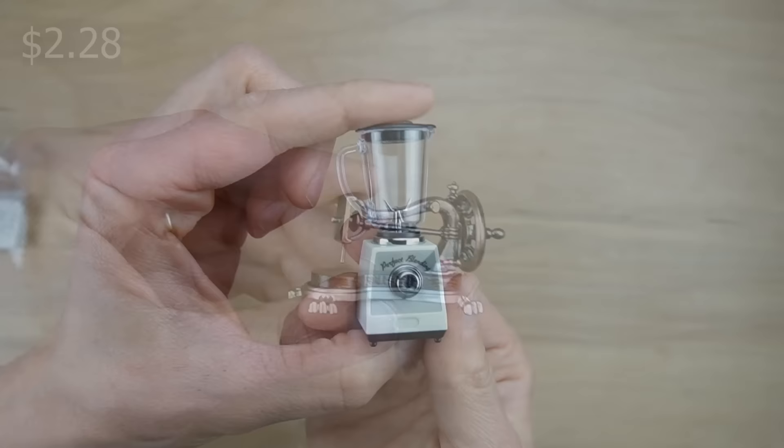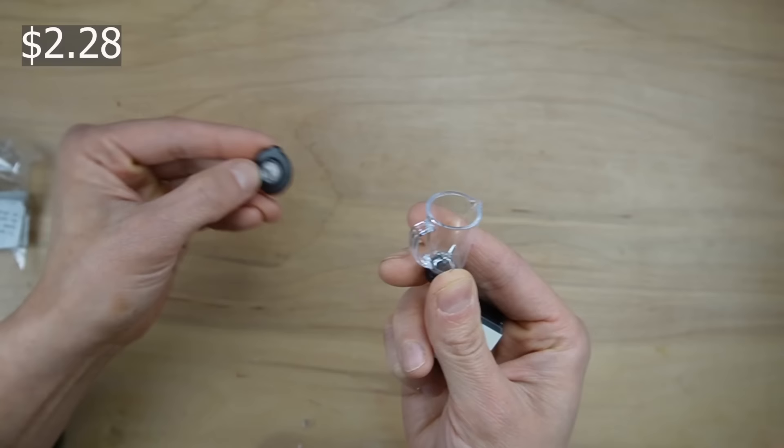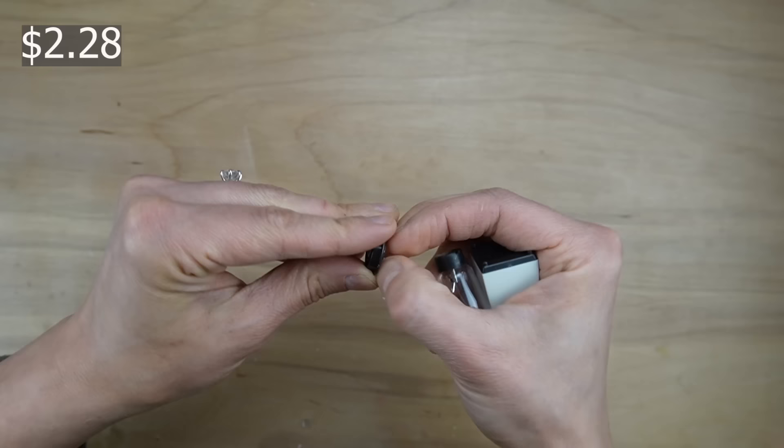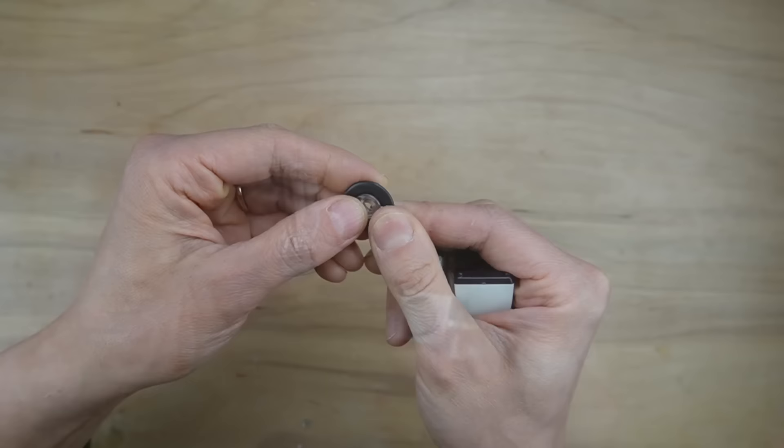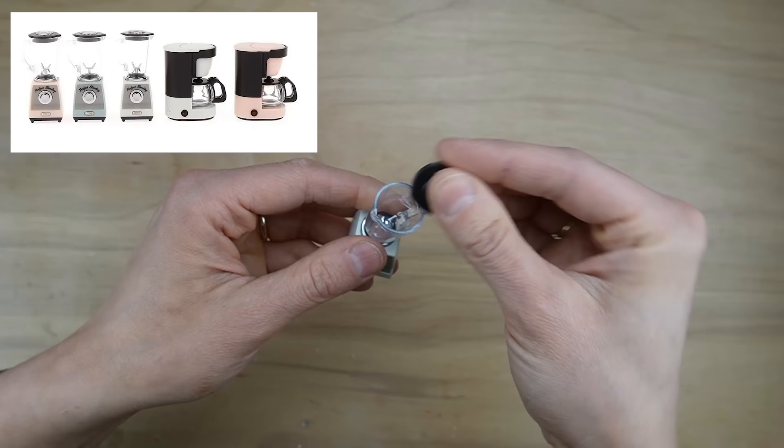I really like the details on this blender. The top comes off so you could fill it with resin and clay fruit if you want to pretend you're about to blend a smoothie. This little piece doesn't come out but it kind of looks like it would. There are other color options available as well if you don't like the white.